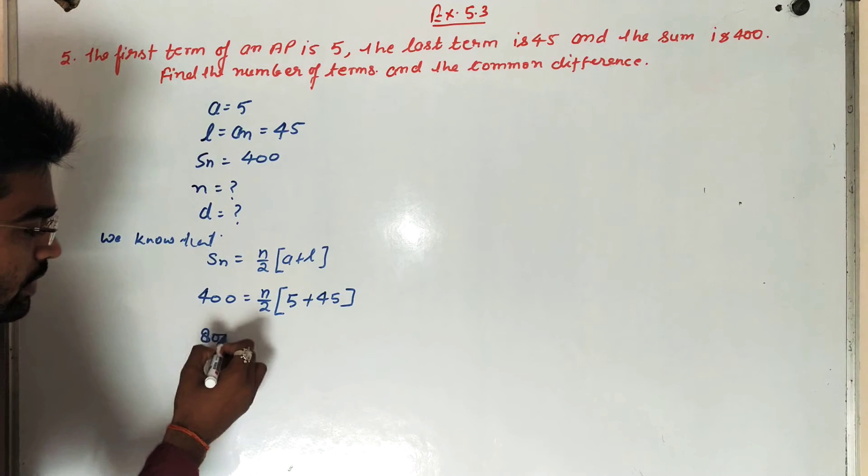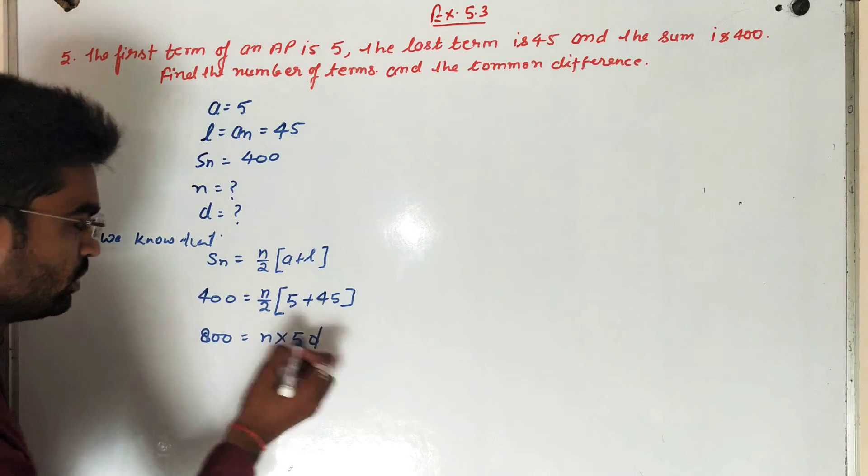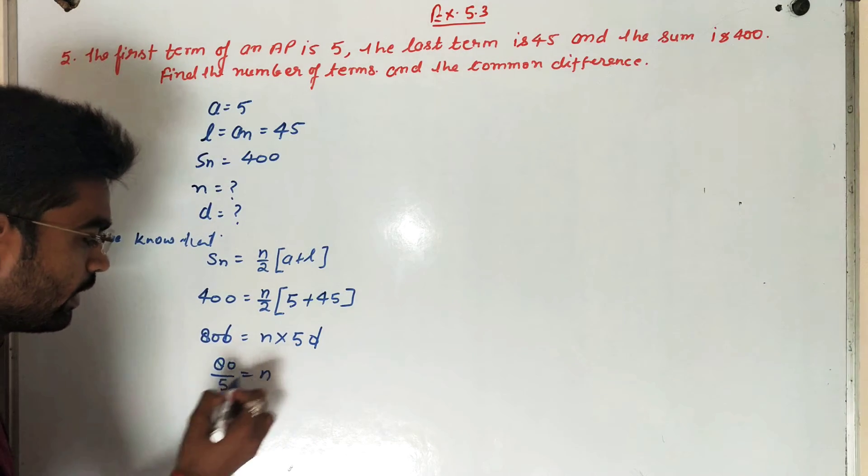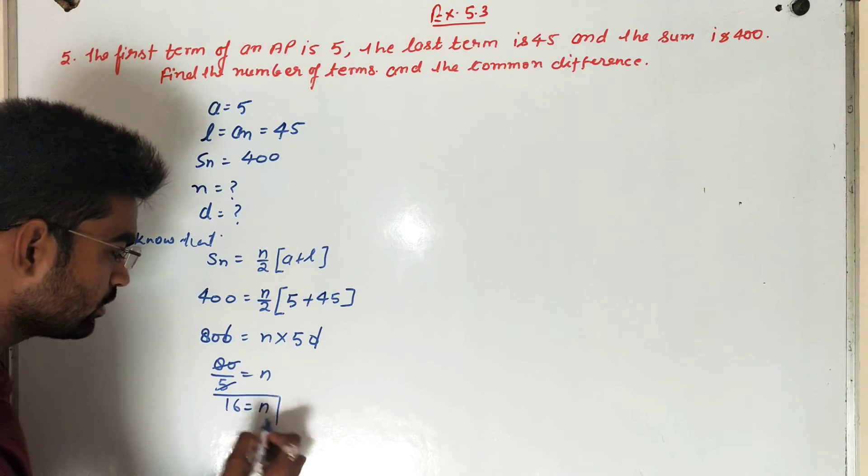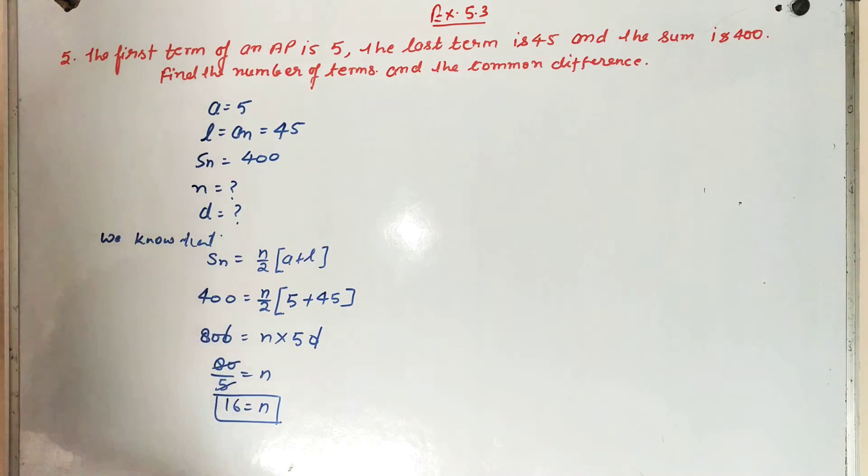Transfer and simplify: 800 equal to N into 50. Cancel out zeros, 80 upon 5 is equal to N. N is equal to 16. How many terms? 16 terms.